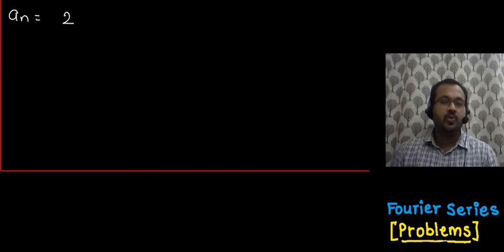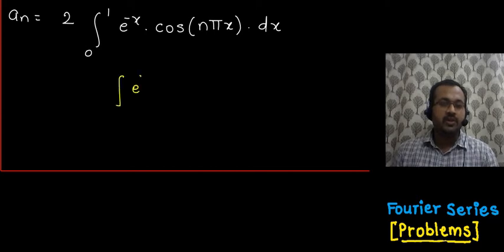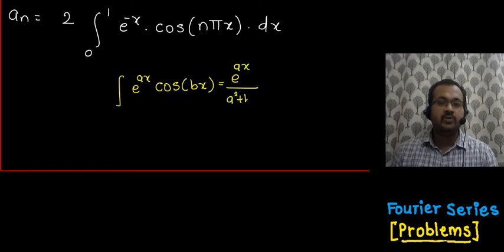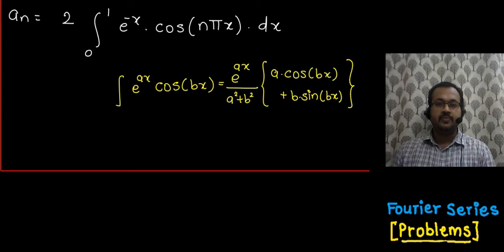Similarly, we evaluate aₙ = 2 times the integral from 0 to 1 of e raised to minus x times cos(nπx) dx. We apply the standard formula: the integral of e raised to ax times cos(bx) equals e raised to ax divided by (a² + b²), multiplied by a times cos(bx) plus b times sin(bx).